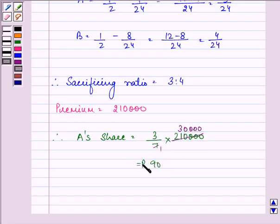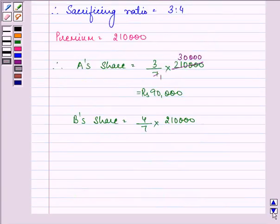That is Rs 90,000 and B's share is 4/7 into 2,10,000. That is coming out to be Rs 1,20,000.